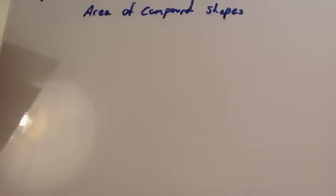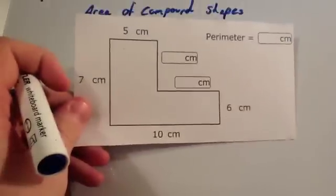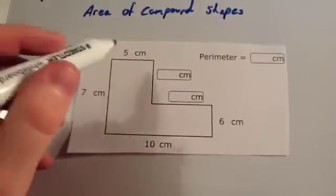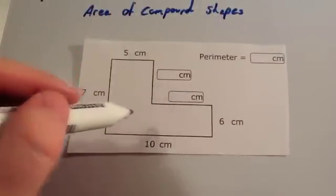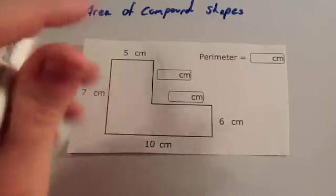We're now going to look at how to find the area of compound shapes. A compound shape is where you've got two shapes that have been put together. So here we've got a rectangle and another rectangle that have been put together to give you this L-shape.